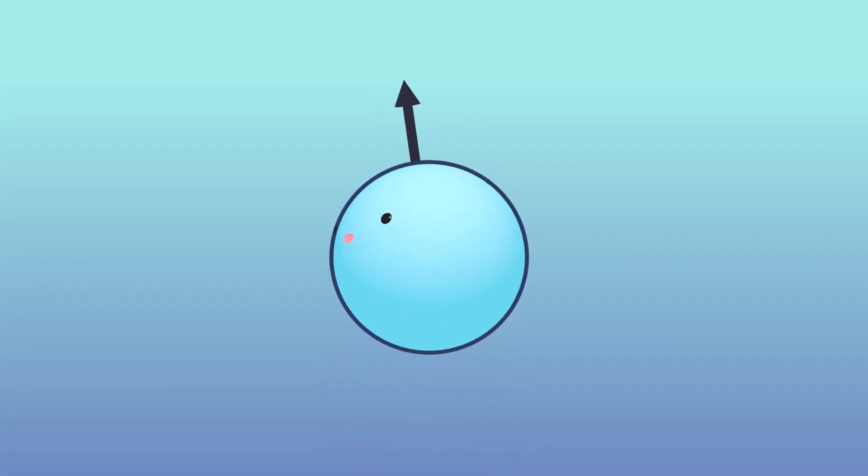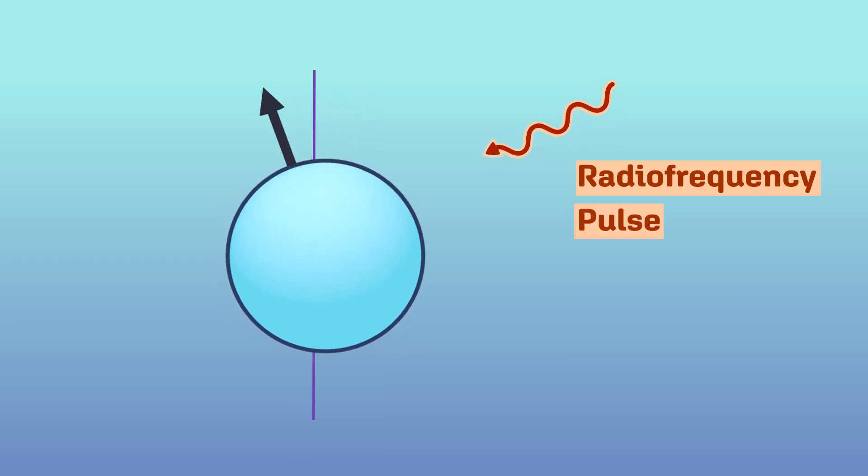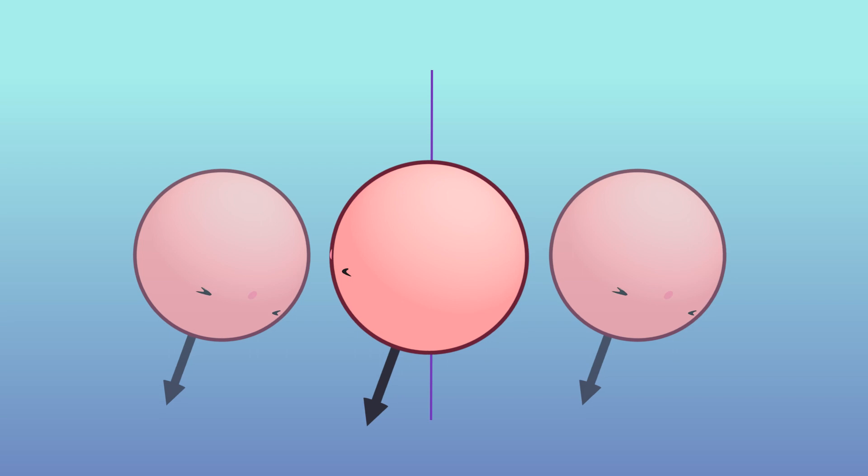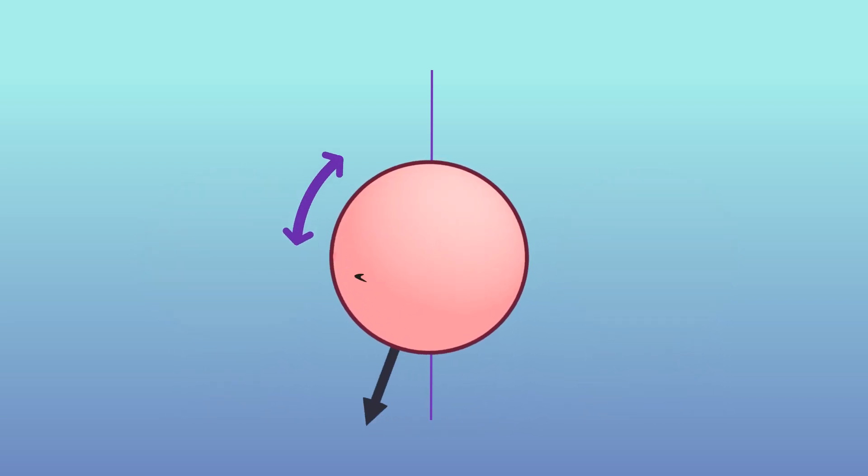With the protons aligned with the main magnetic field, we can influence them using externally applied radiofrequency, or RF, pulses. When this happens, the protons are knocked down into an alternate plane and also precessed together in phase. The angle depends on the strength and duration of the RF pulse.